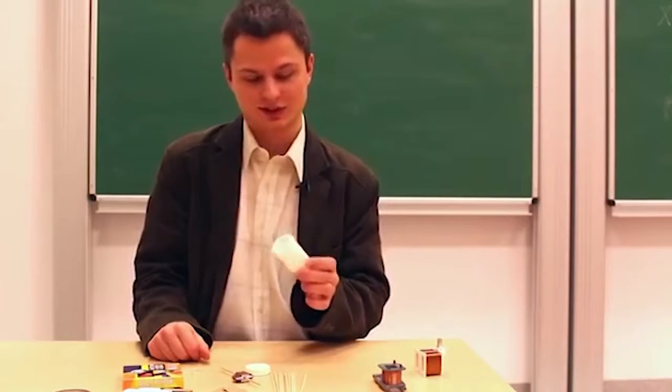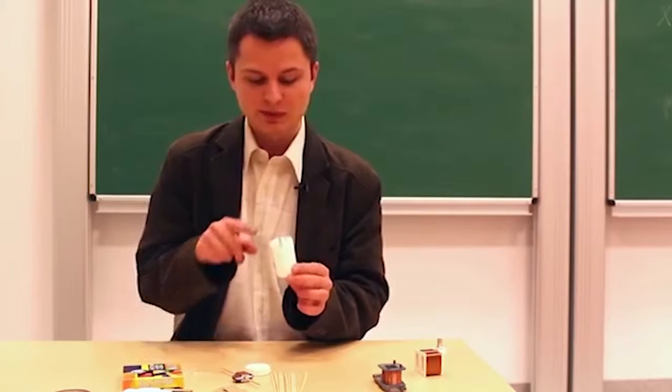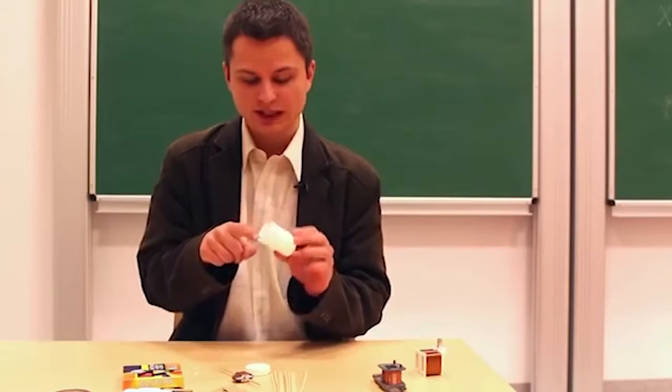The plastic bottle will serve as the basis for the wind turbine. In order to be able to attach a rotor to it, you should cut two slits in it, more or less as shown here.